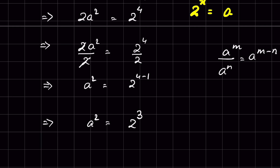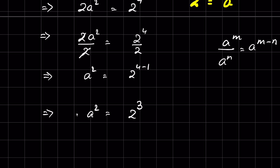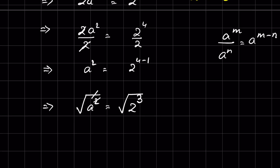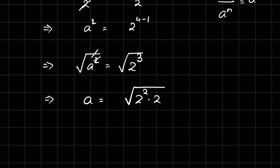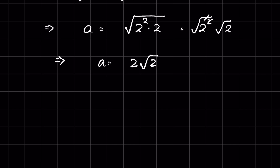So a squared equals 2 raised to the power 3. Taking the square root of both sides to remove the square on the left, we get a equals the square root of 2 cubed. We can write 2 cubed as 2 squared times 2, so the square root gives 2 squared under the square root times the square root of 2, which simplifies to a equals 2 times the square root of 2.